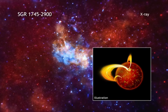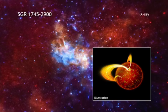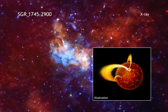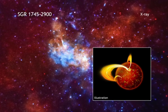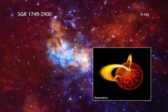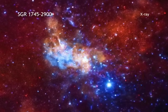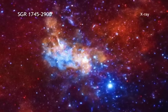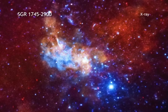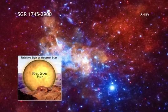Magnetars are dense, collapsed stars called neutron stars that possess enormously powerful magnetic fields. This magnetar, which astronomers named SGR 1745-2900, could be as close as 2 trillion miles from the black hole at the center of the Milky Way.